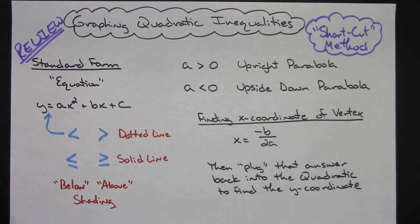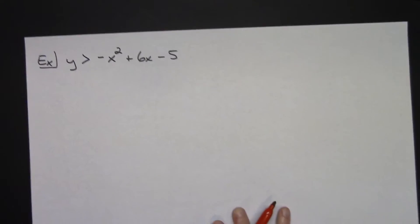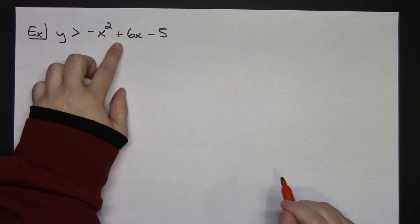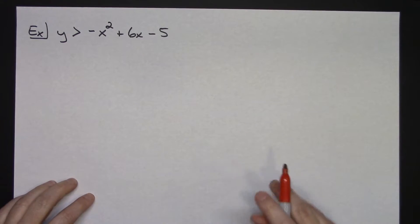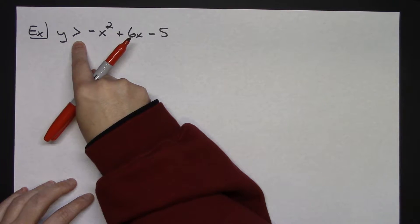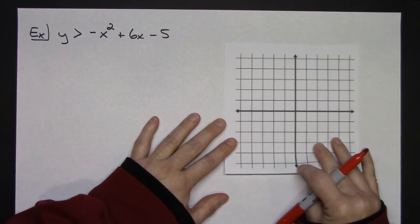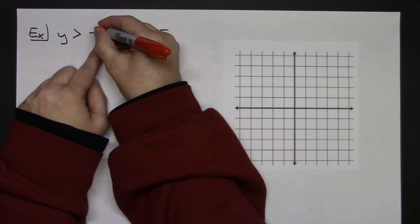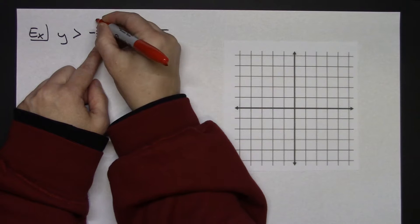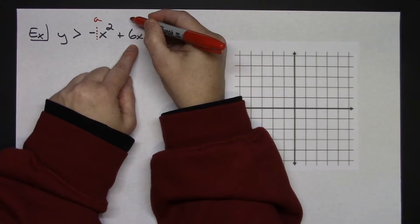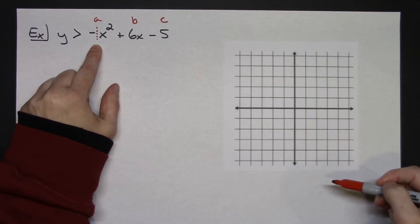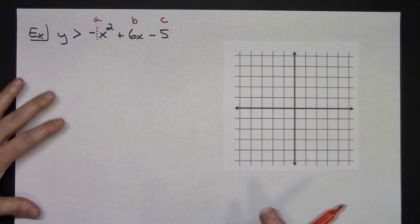For our first example, we're going to look at y is greater than negative x squared plus 6x minus 5. It's a greater than sign, so when I go to put it on my graph I am going to be using a dotted line. The leading coefficient has an imaginary negative 1 in front, so a equals negative 1, b equals 6, and c equals negative 5. That negative tells us it is going to be an upside down parabola.